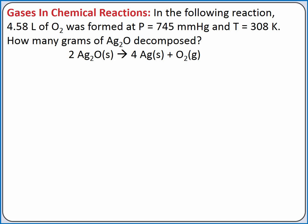Let's practice with gases in chemical reactions and stoichiometry. Our problem reads: in the following reaction, 4.58 liters of oxygen was formed at 745 millimeters of mercury and 308 Kelvin. How many grams of silver oxide decomposed?